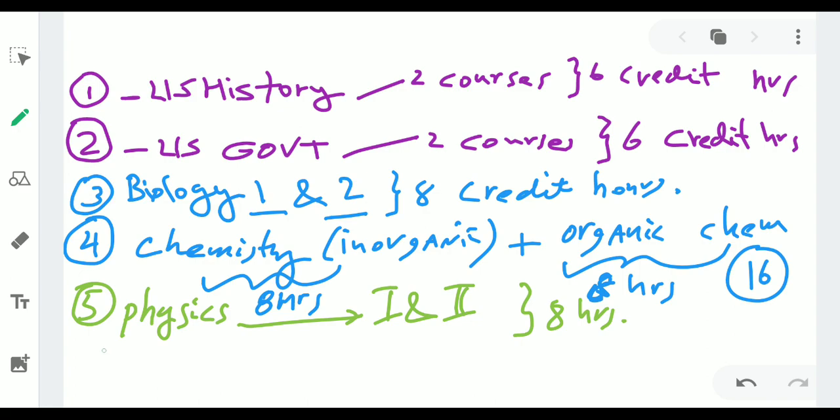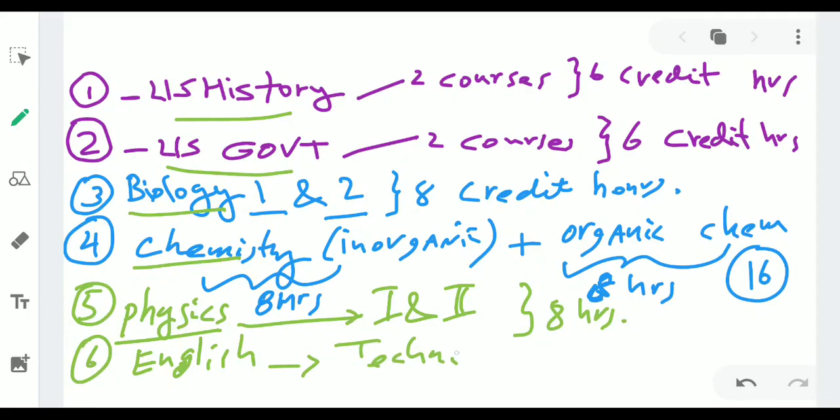You also need, let me see, so we mentioned, these are the main ones, basically, chemistry, biology, physics, government. Then you need English. I had one course of English. Some places they may require two. I also had a technical writing, which is not required, but the more, the better to know the language. The English course was only three hours, but I had technical, so I had three plus three, that's six hours.